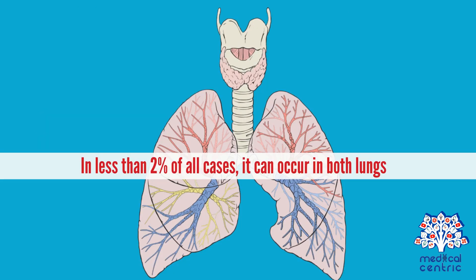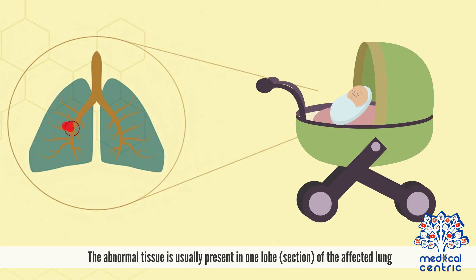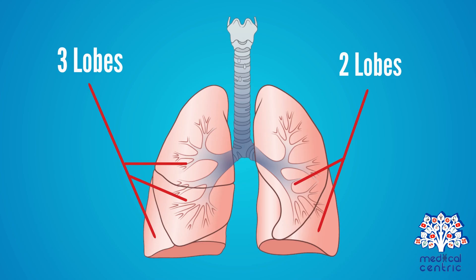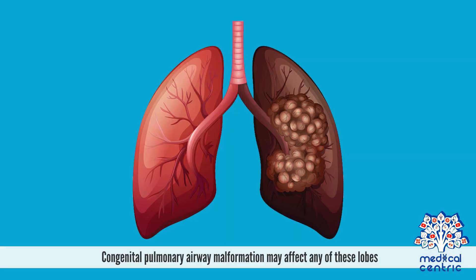In less than 2% of all cases, it can occur in both lungs. The abnormal tissue is usually present in one lobe, or section, of the affected lung. The left lung comprises two lobes, and the right lung has three lobes. Congenital pulmonary airway malformation may affect any of these lobes.